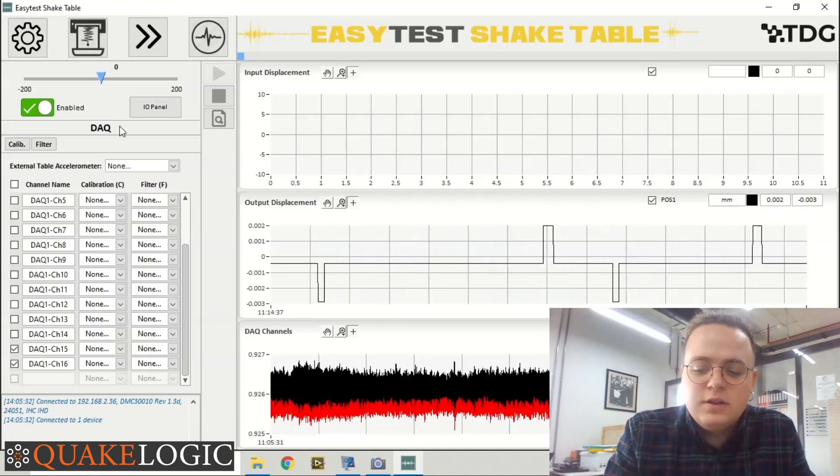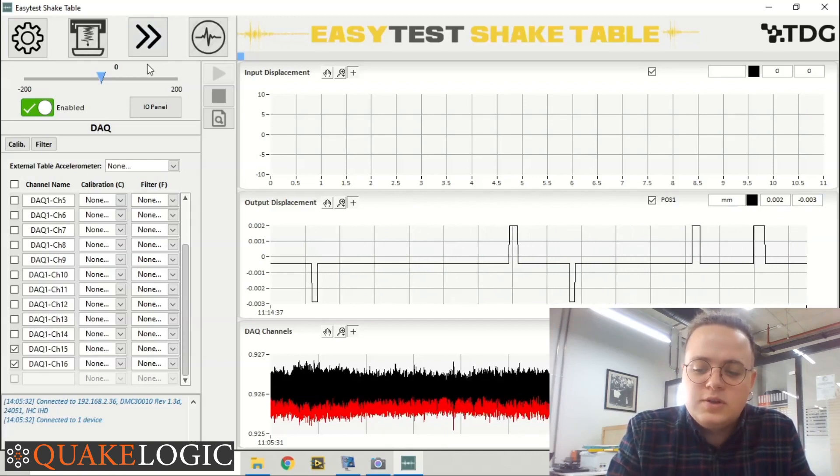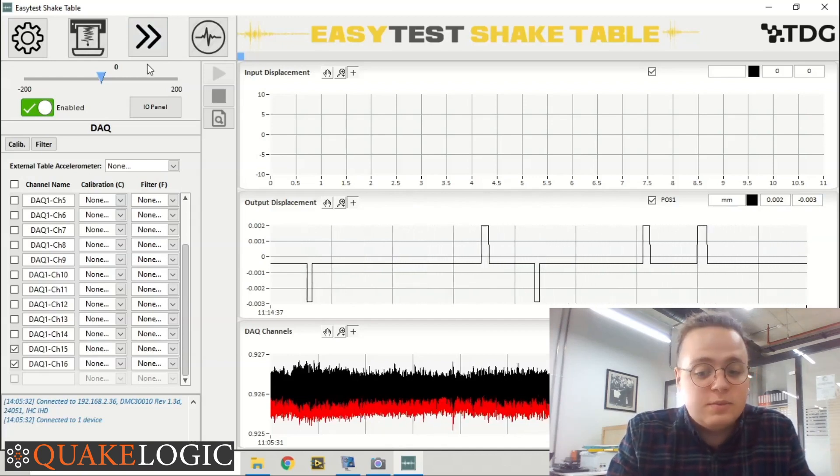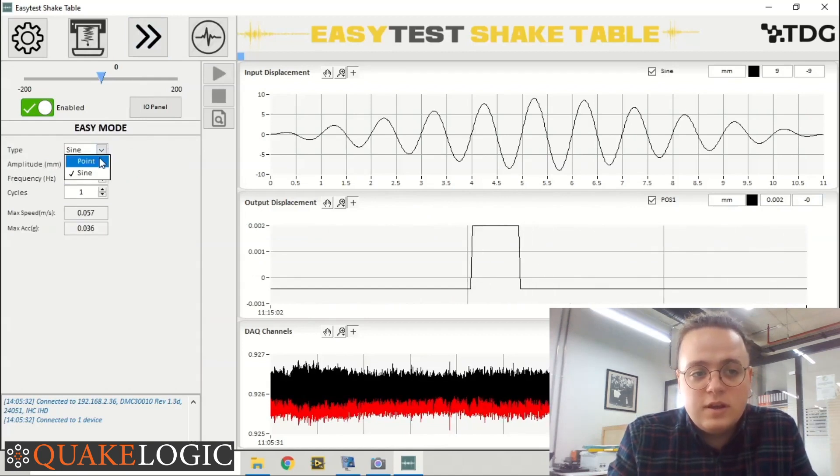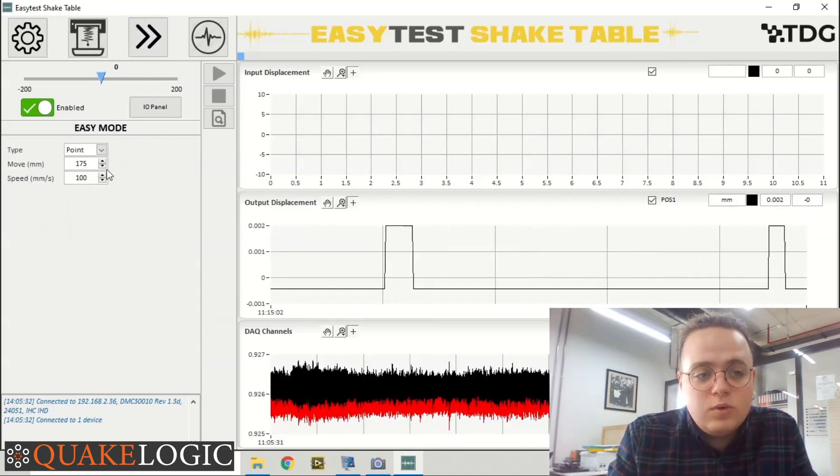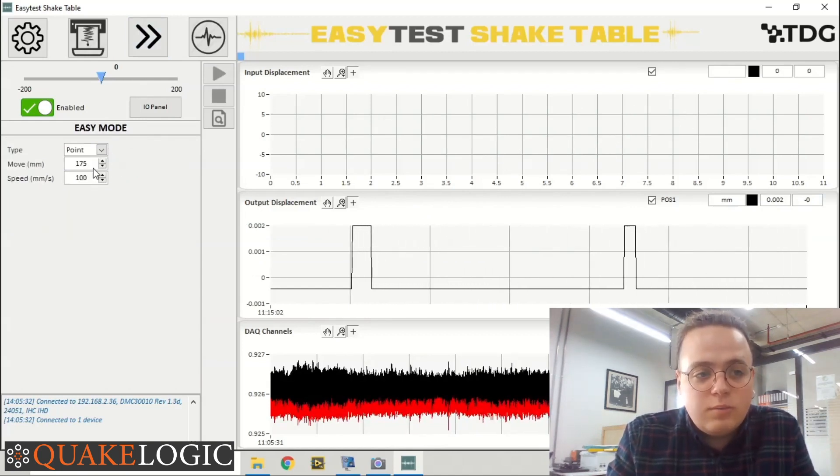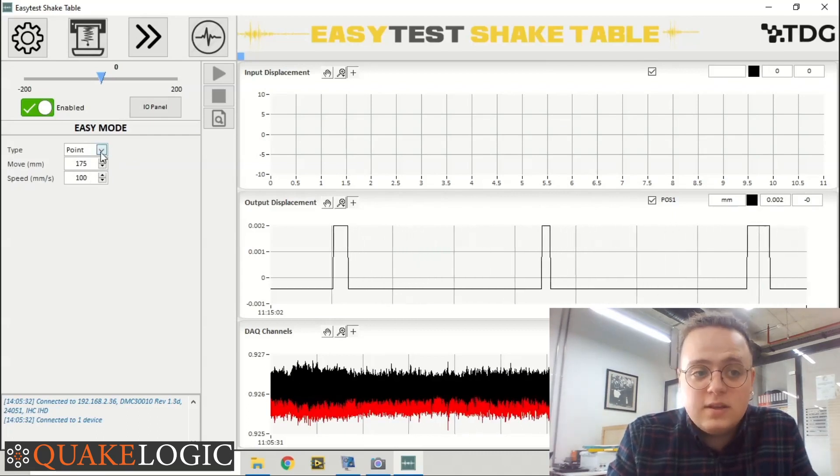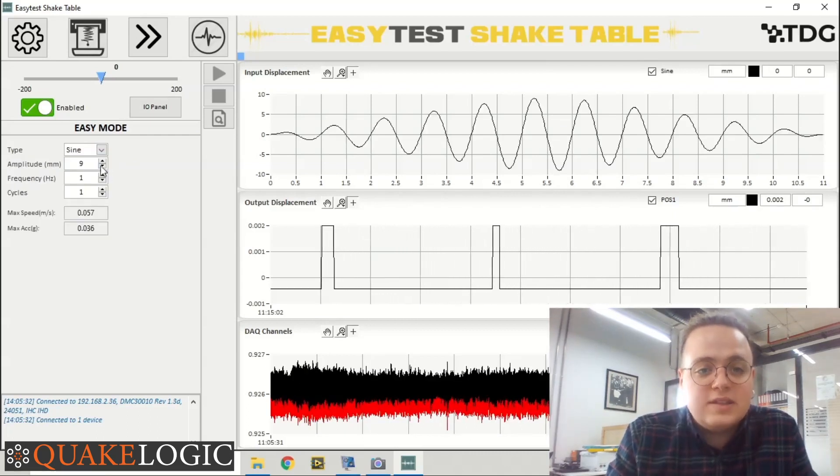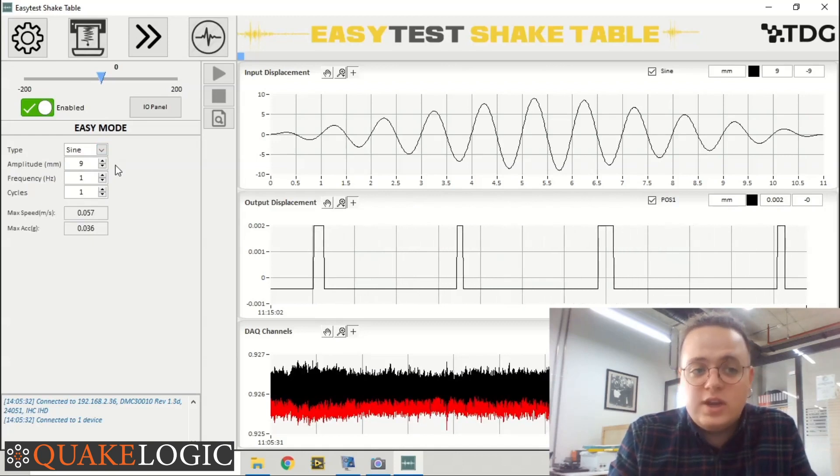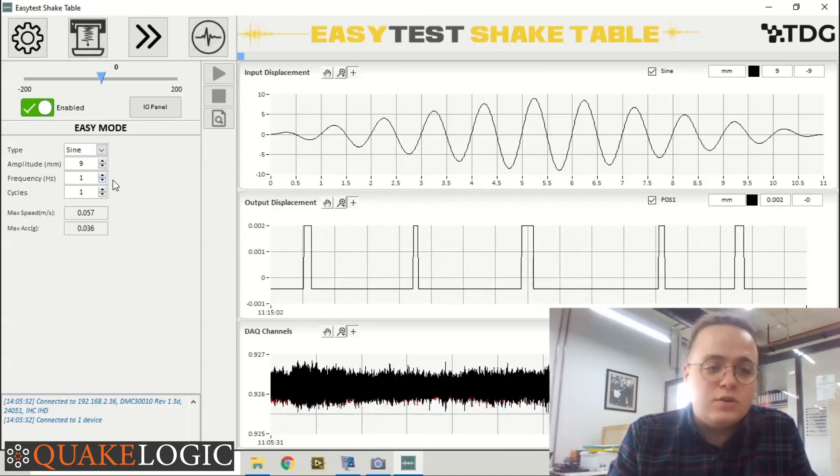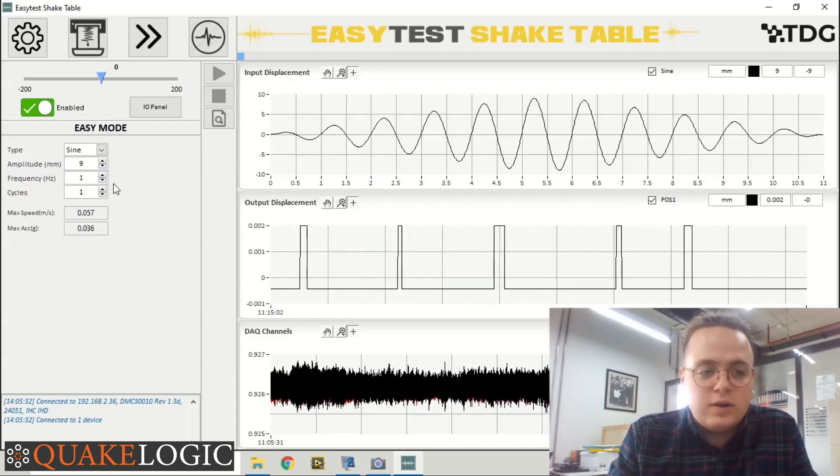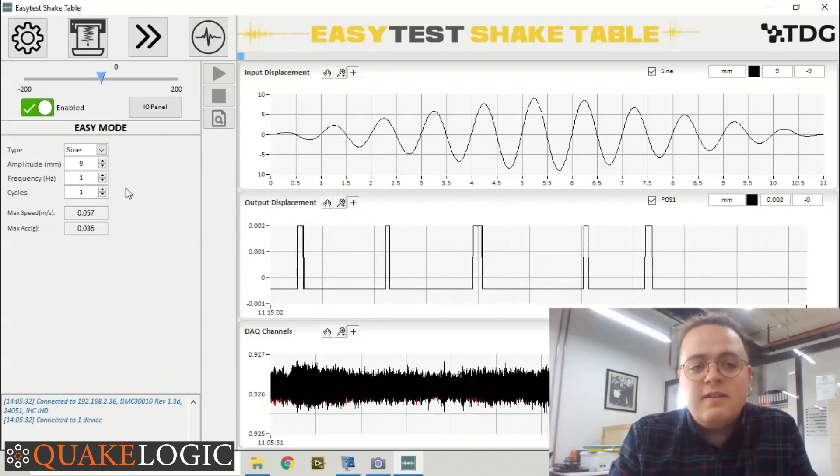In order to send the wave to the shake table, software offers two options. One of these options is Easy Mode. In Easy Mode we have two different options: in the Point mode we can move the table to a given point with a given speed. In the Sign mode we can send a sinusoidal wave to our shake table with a given amplitude, frequency, and for the cycles that we want.